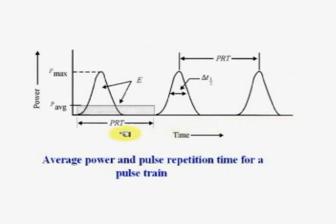We will be doing the experiment to illustrate how the pulse parameters can be changed. Let us look at the first slide in which a pulse train is shown. In this pulse train, you can see three pulses. If you take a measurement from the beginning of the first pulse to the beginning of the second pulse, we call that the pulse repetition time (PRT).